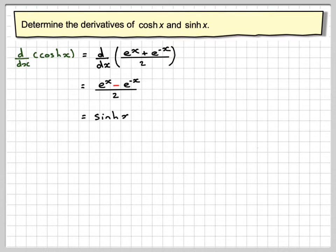Now, you might recognize this as sinh x. So the derivative of cosh x is actually sinh x.